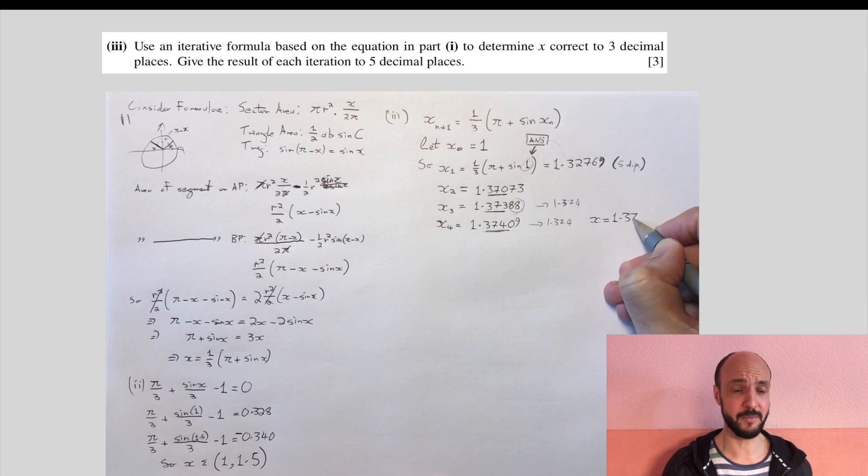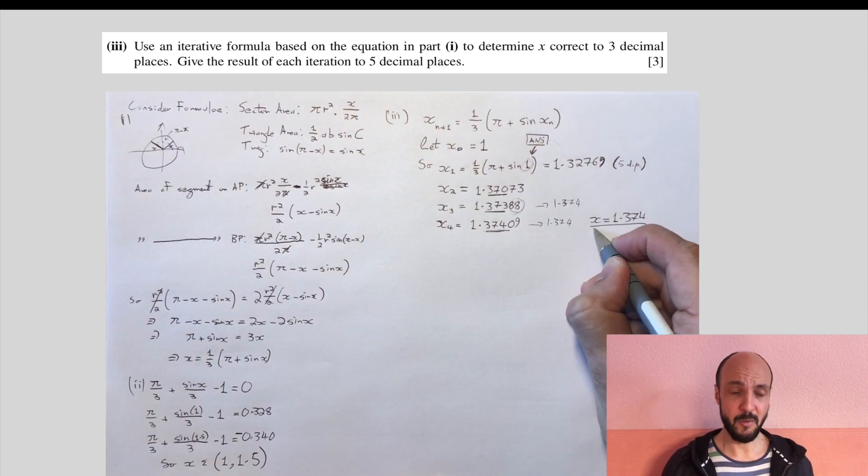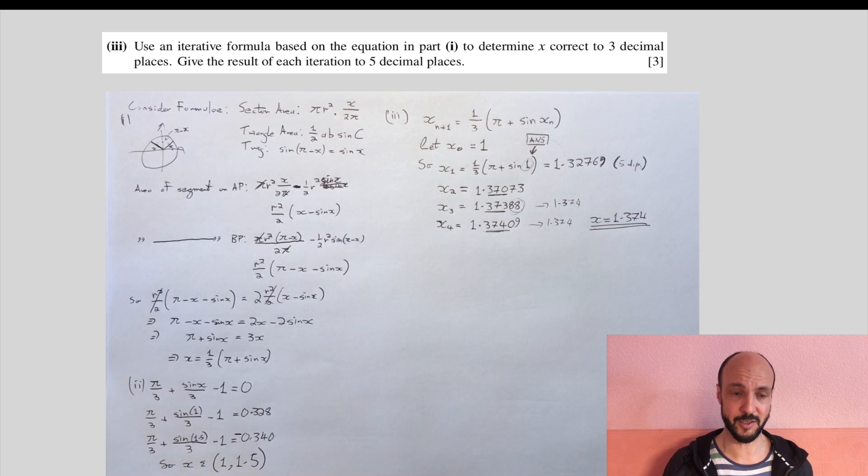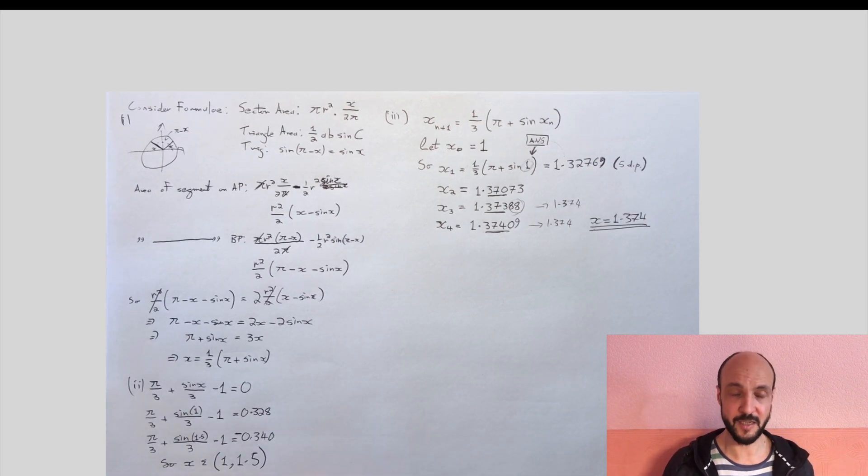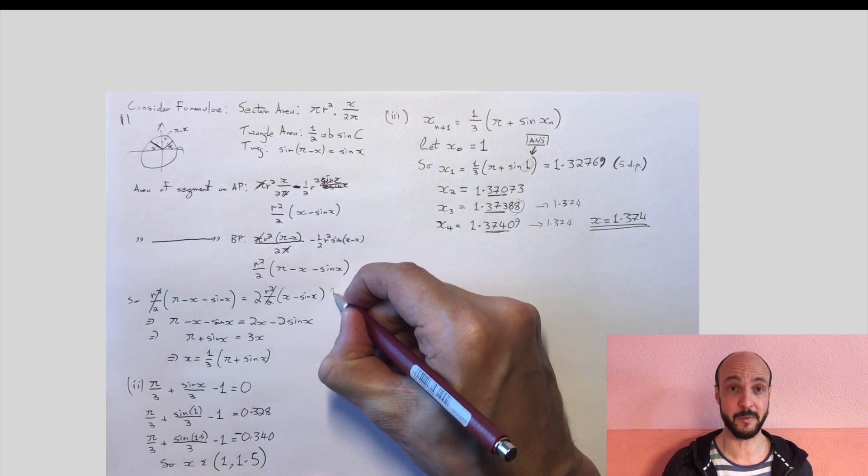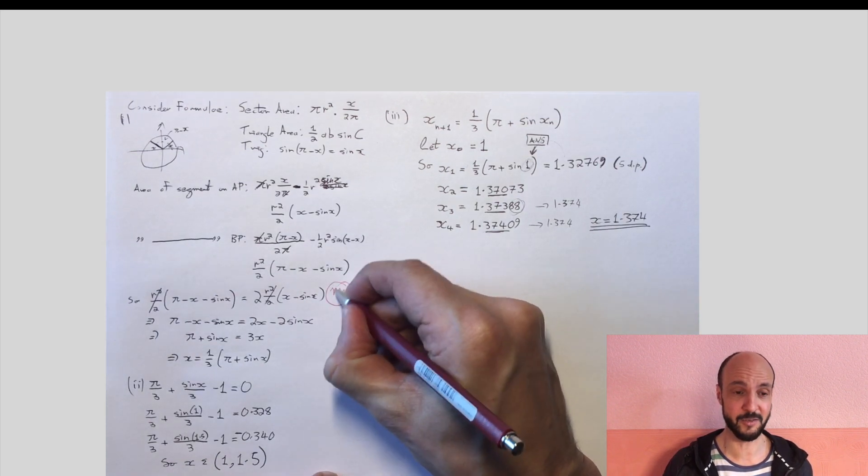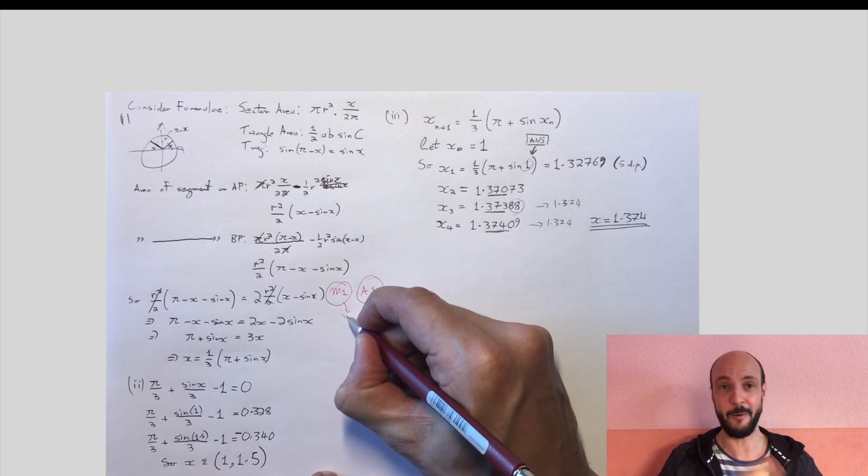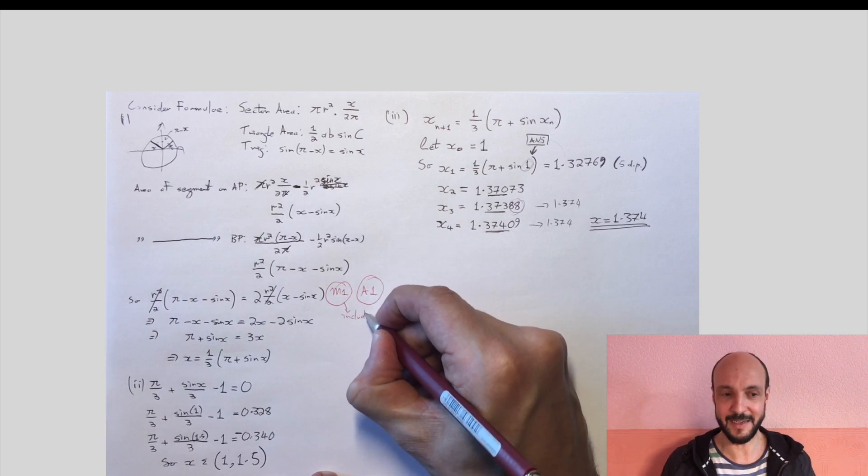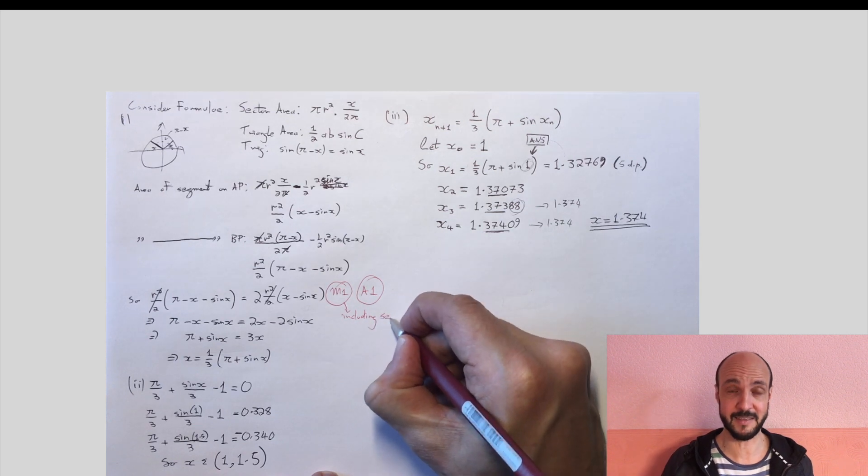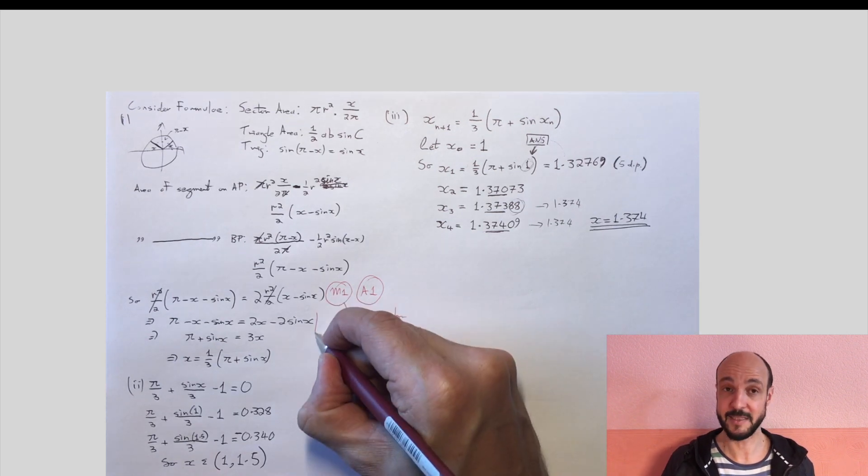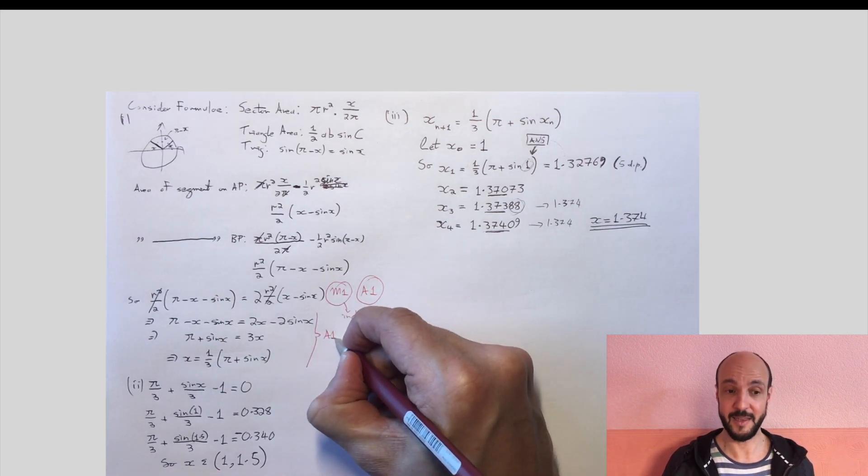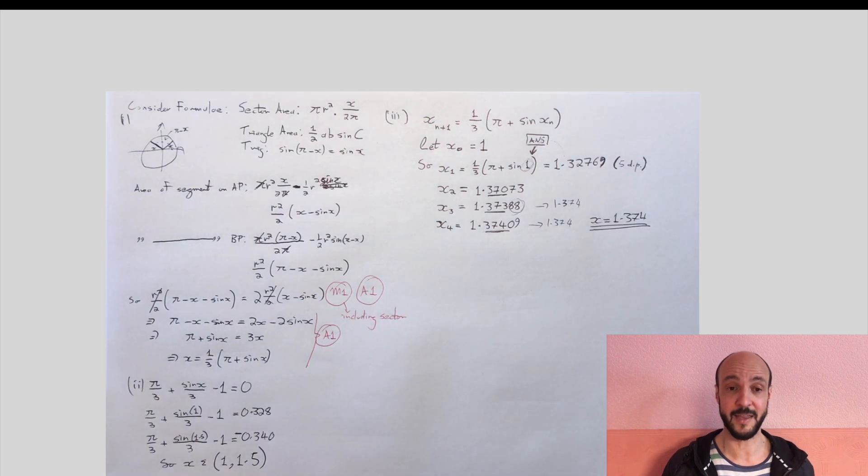Now if we check the mark scheme, on the first part, they were looking to see if you wrote an equation, and you got a method mark if you wrote an equation that involved the sector formula, it was specifically the sector formula they were interested in. And then you got an accuracy mark if it was the correct equation, however messy it was. If you then simplified it using correct steps without any mistakes in them to get the equation that you were given, then you got a third mark, another accuracy mark.